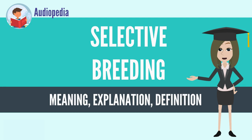Selective breeding, also called artificial selection, is the process by which humans use animal breeding and plant breeding to selectively develop particular phenotypic traits and characteristics by choosing which typically animal or plant males and females will sexually reproduce and have offspring together.